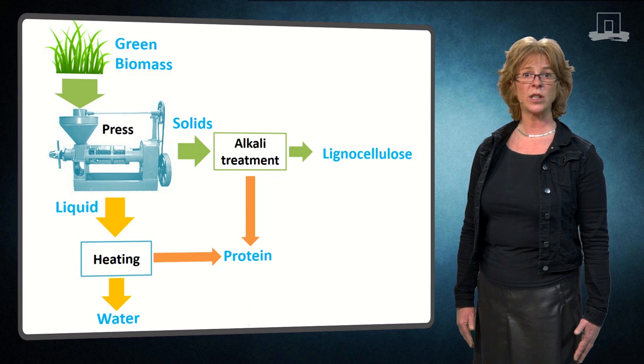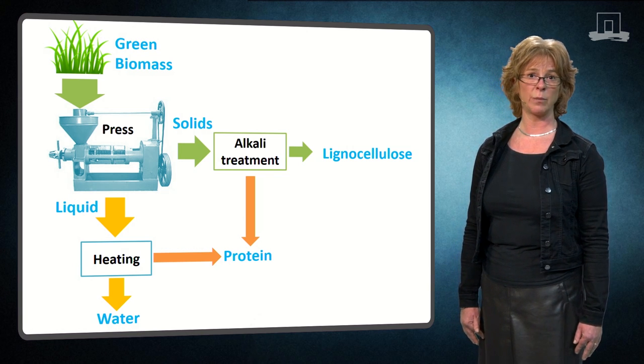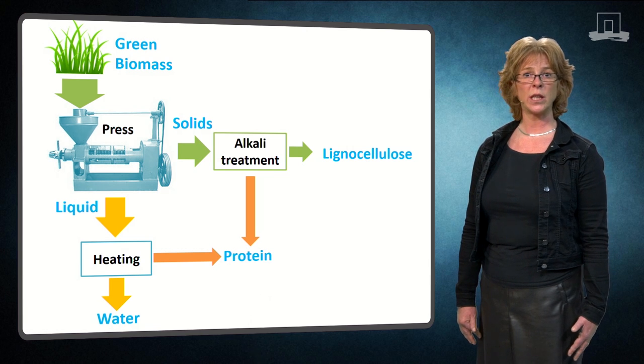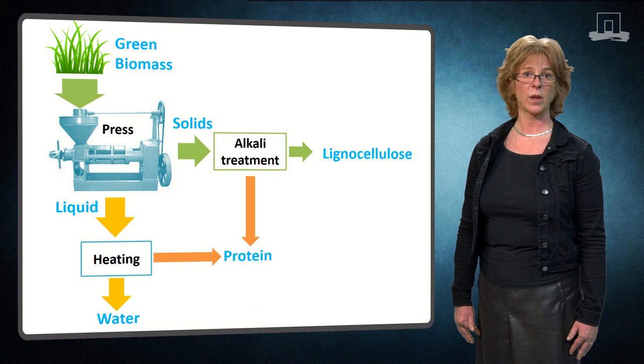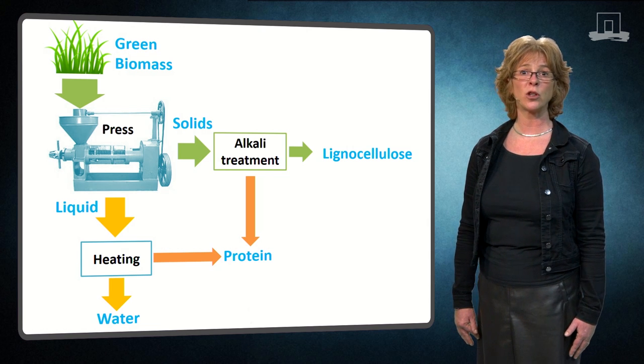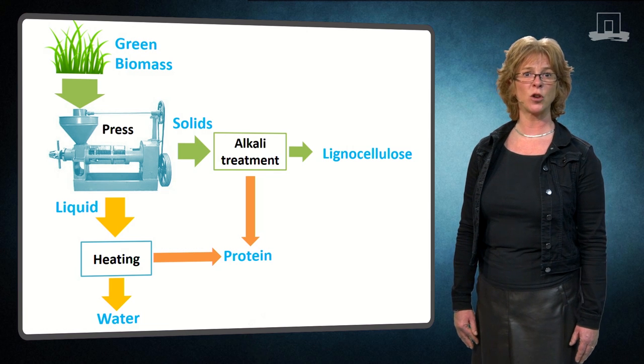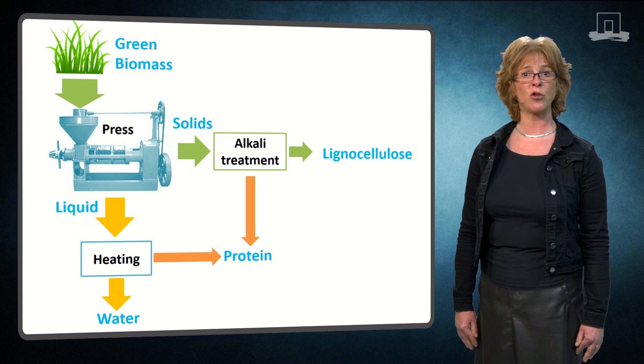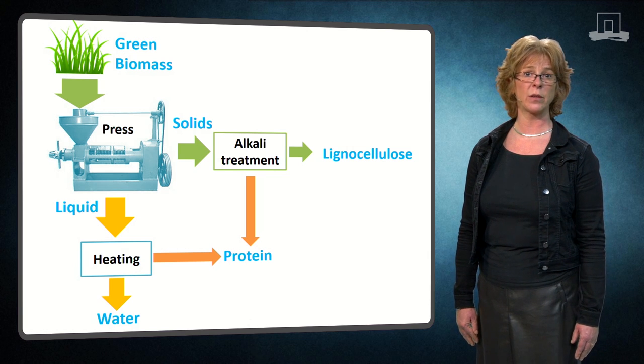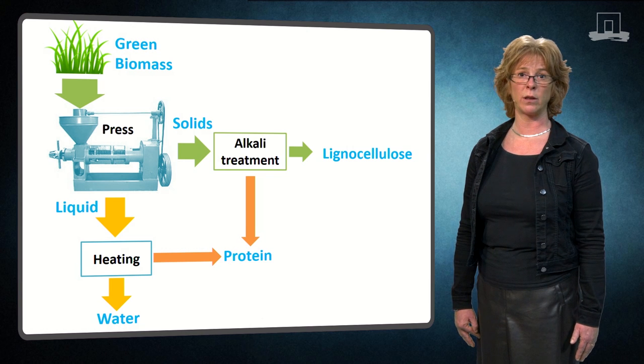The solid fraction contains some insoluble protein and lignocellulosic material. More protein can be extracted under mild alkali pH conditions. The remaining solid could be used as a source of lignocellulose. Similarly, if lipid feedstocks are used, a meal containing protein and lignocellulose remains after removing the lipid. This meal can also be used as a source of lignocellulose.